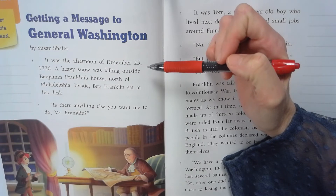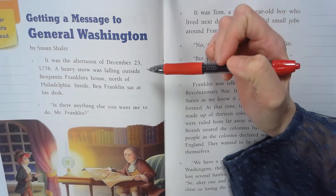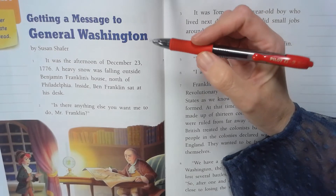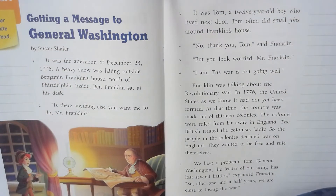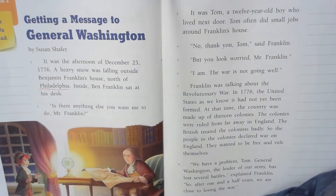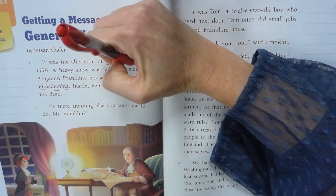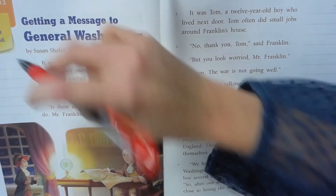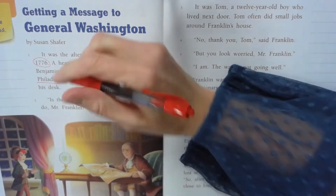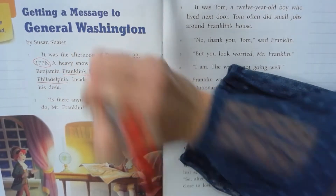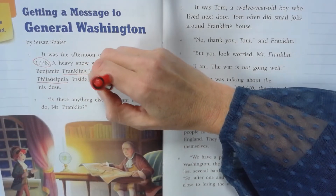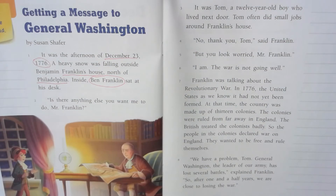It was the afternoon on December 23rd, 1776. Heavy snow was falling outside Benjamin Franklin's house north of Philadelphia. Inside, Ben Franklin sat at his desk. This paragraph tells me where the story takes place — Philadelphia — and when — December 23rd, 1776. We could also say it takes place in Franklin's house. And we've learned of one character so far: Benjamin Franklin.